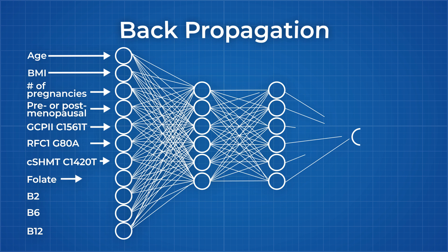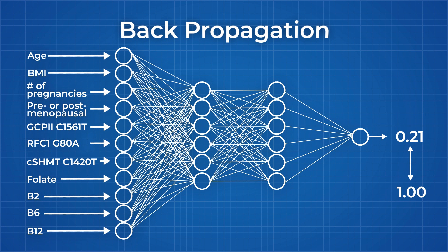This involves comparing the output that was just produced with the output it was meant to produce, which we know since this is still the training dataset, and then using the difference between them to modify the weights of the connections between the layers in the network, and then running the network again.